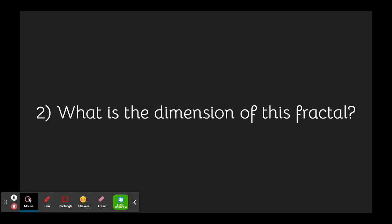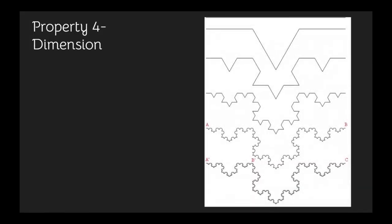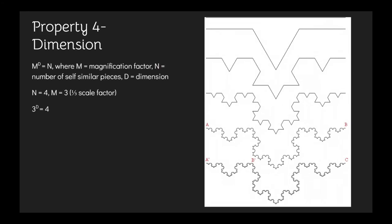Another FAQ is what is the dimension of this fractal? To find the dimensions of the Koch line, we use the equation m to the power of d equals n, where m is the magnification factor, n is the number of self-similar pieces, and d is the dimension.